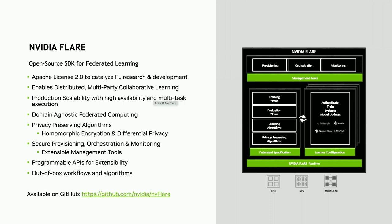We have APIs to query the system — how it's working, how many jobs are running, and what the resource consumption is on each node. We also support different workflows and algorithms out of the box. If you want FedAverage, done. If you want cyclic — where one client trains and sends to the next client, which takes over and trains again — that's also available. Just change one line of configuration.